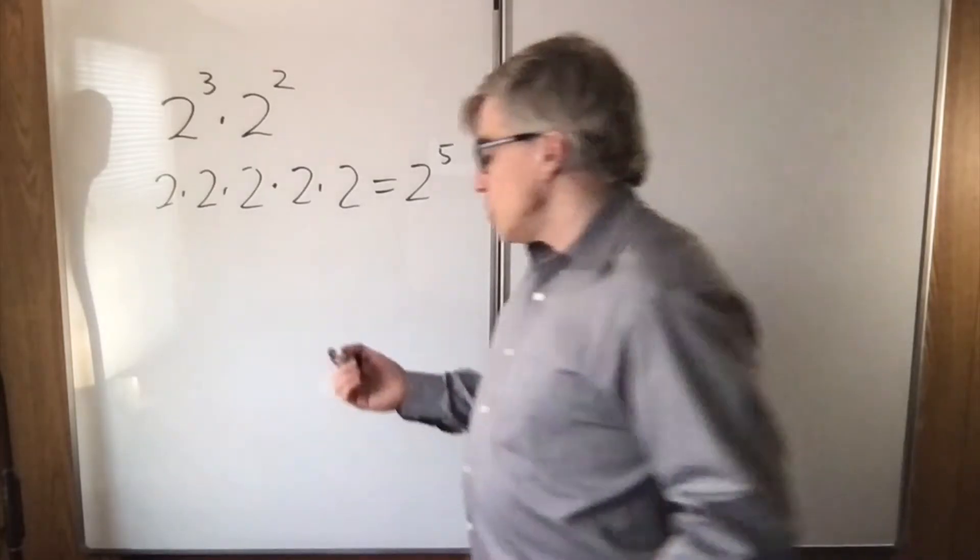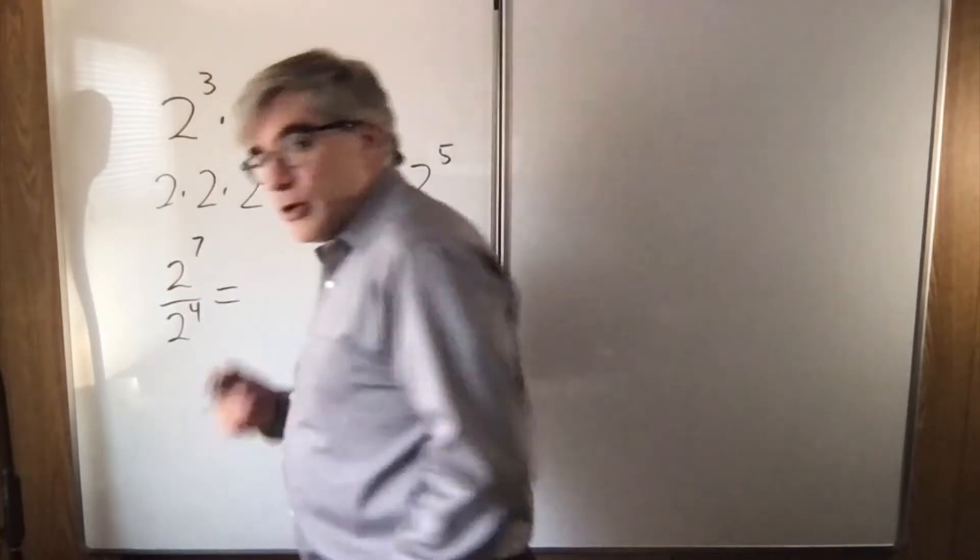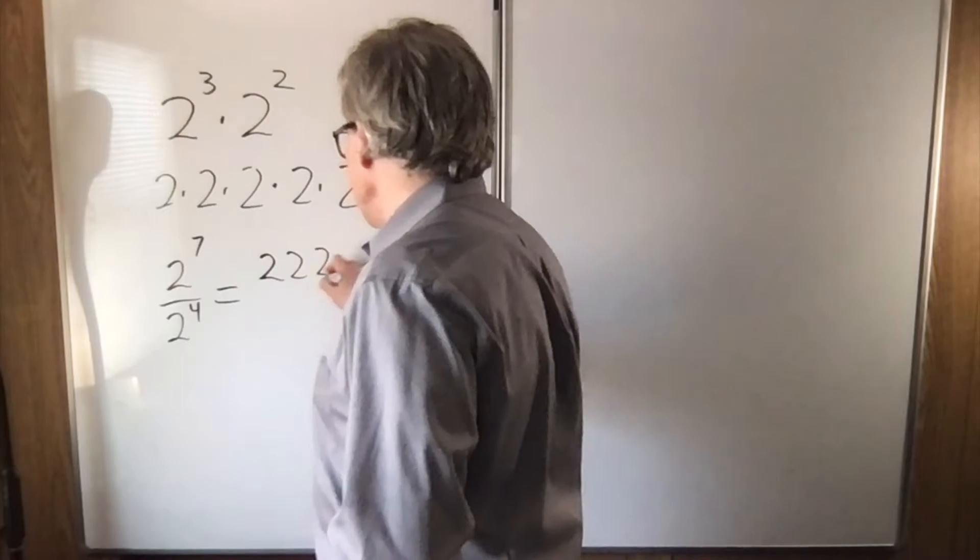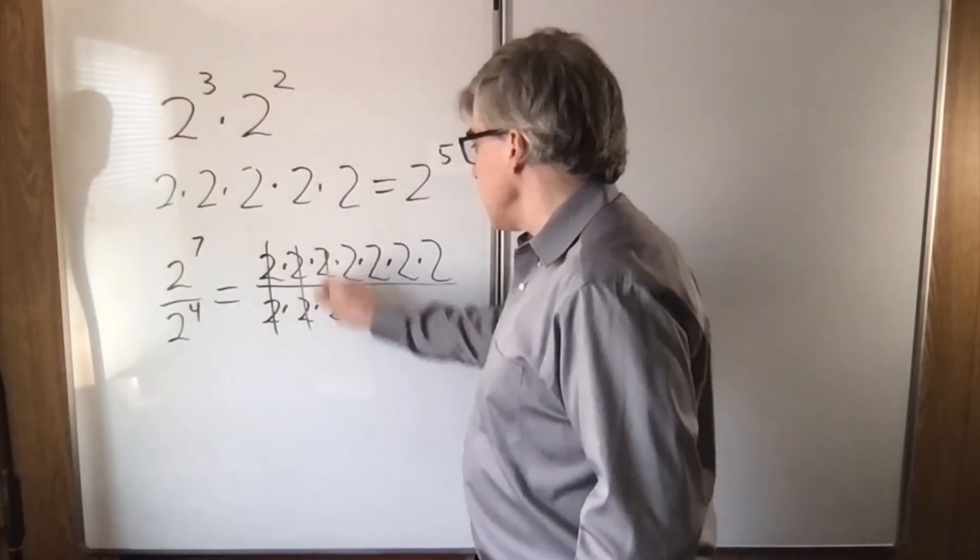Likewise, what's the rule if I have 2 to the seventh over 2 to the fourth? Write out what it means. It means you have seven twos divided by four twos. Cancel, cancel, cancel, cancel.